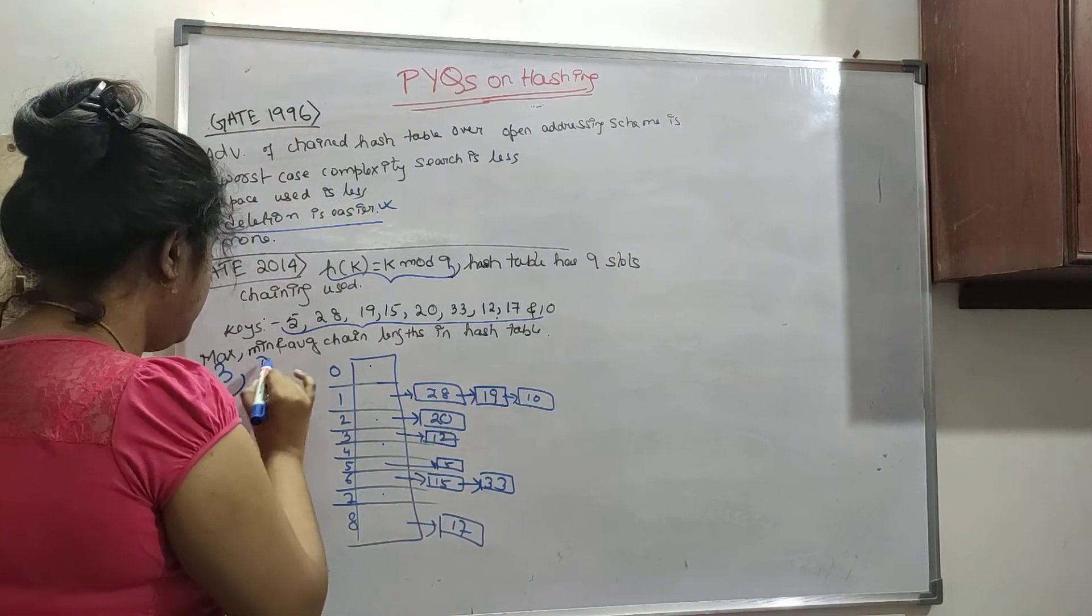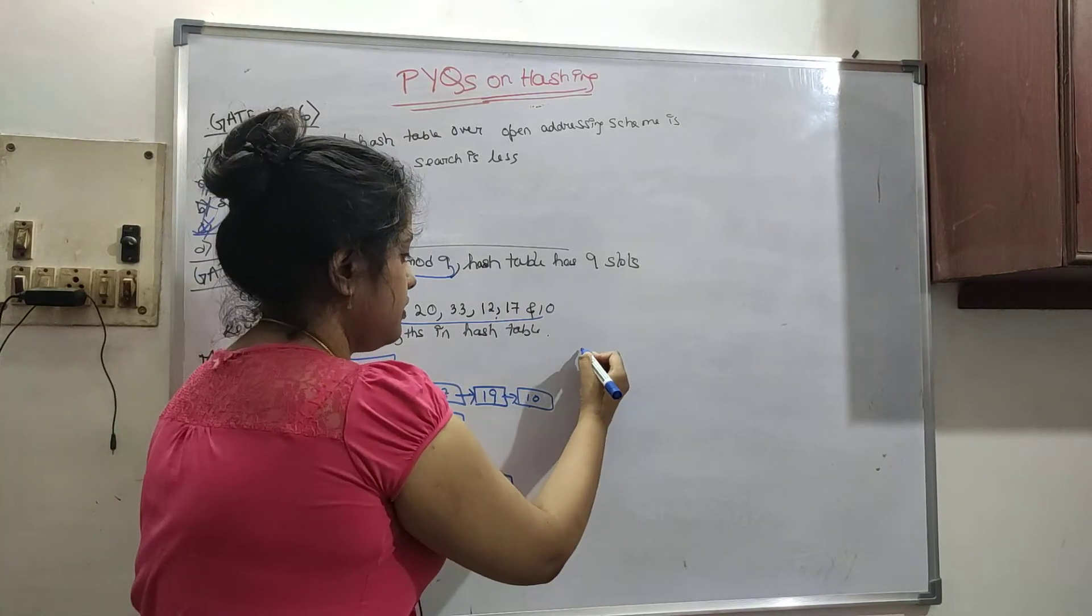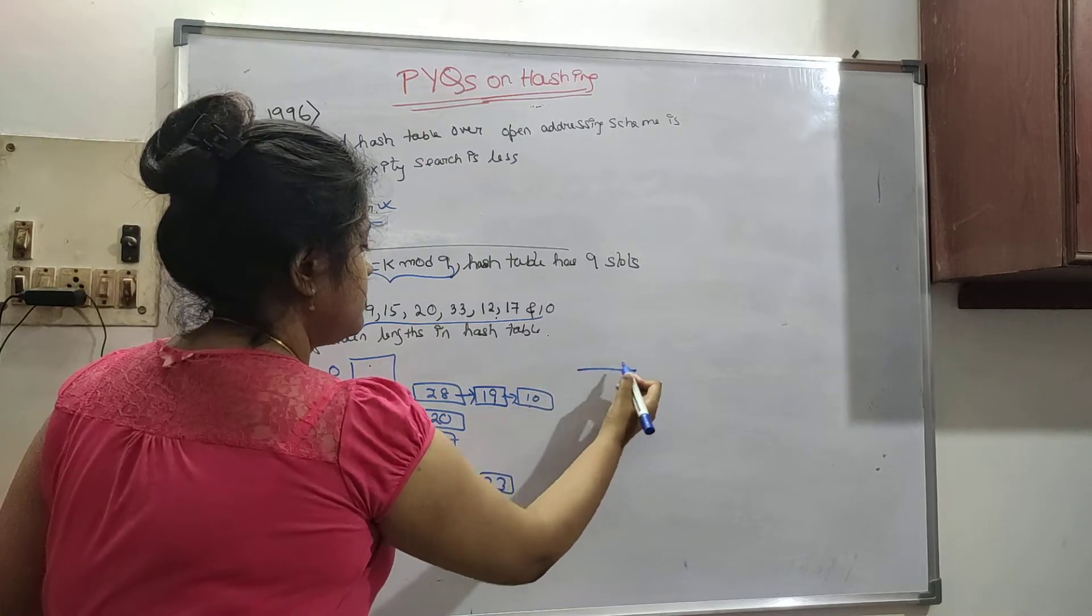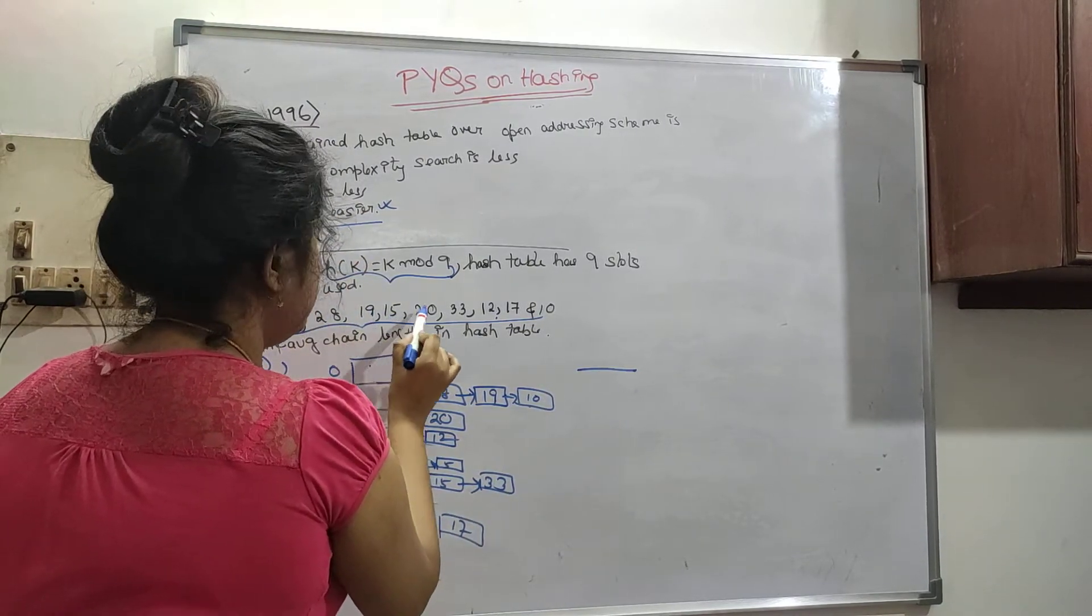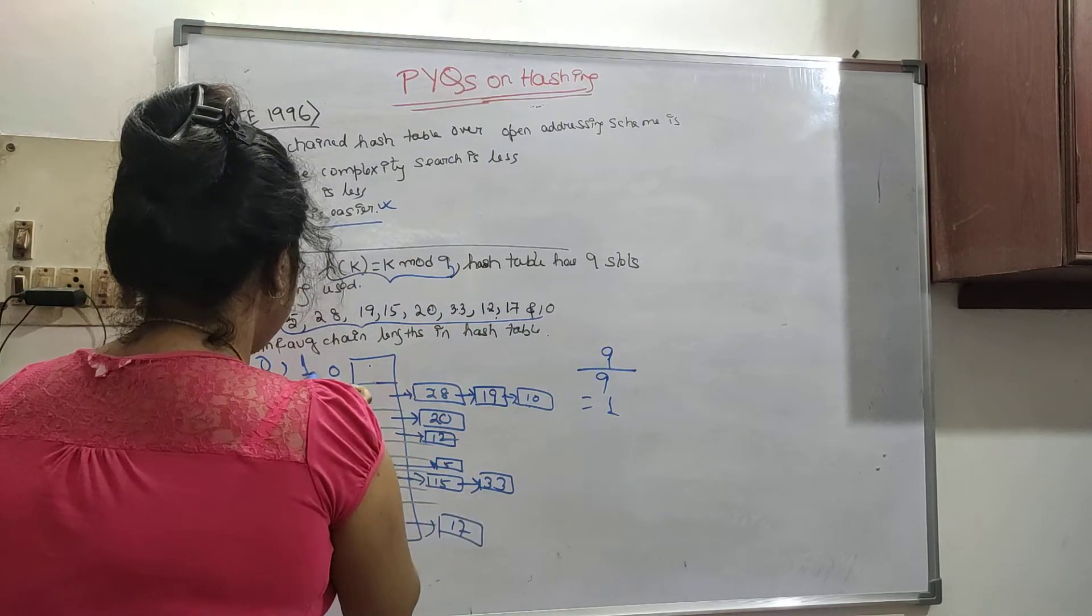So minimum will be 0. And average is elements by slots. So elements 1, 2, 3, 4, 5, 6, 7, 8, 9. 9 by 9 is 1. So average will be 1.